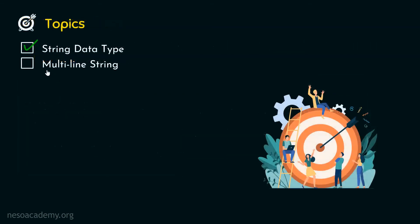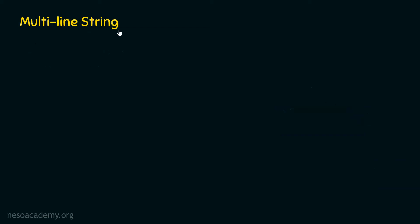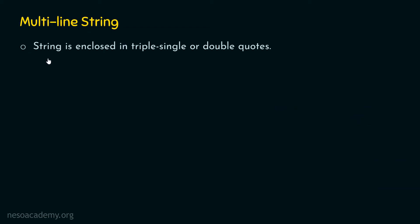Let's move on to multiline string. What is a multiline string? A multiline string is a string which is enclosed within triple single or triple double quotes. As the name itself suggests, a string is called a multiline string if we have multiple lines in that string.